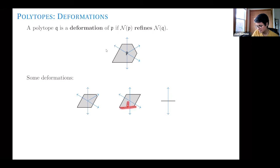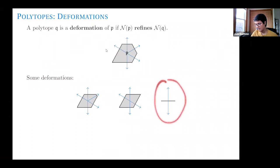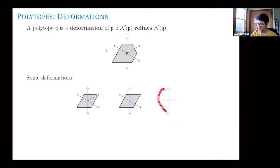Similarly, pushing an edge inward until two edges collapse gives a line segment, which is also a deformation of P. The normal fan of this segment has three cones: the minimal cone is a line (the union of two rays from P's normal fan), and the other two cones are half-spaces, each being the union of cones from P's normal fan. So this is a coarsening of the normal fan of P, which means it's still a deformation of P.